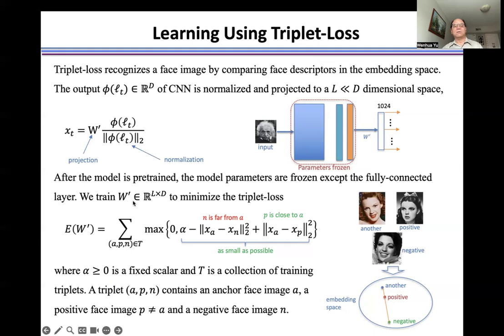We train W' to minimize the triplet loss. This is an anchor, this is a negative face image, and this is a positive face image. This term makes P close to A, and this term makes the negative face image far away from the anchor face image.